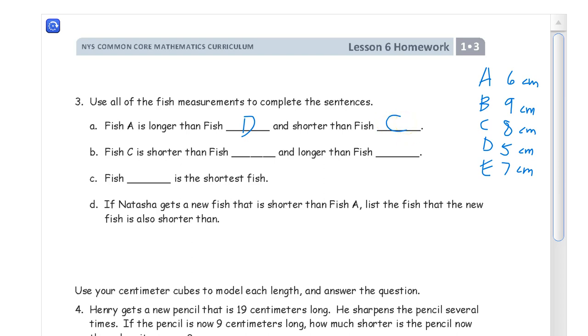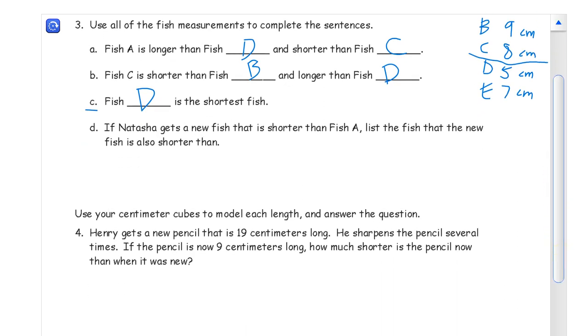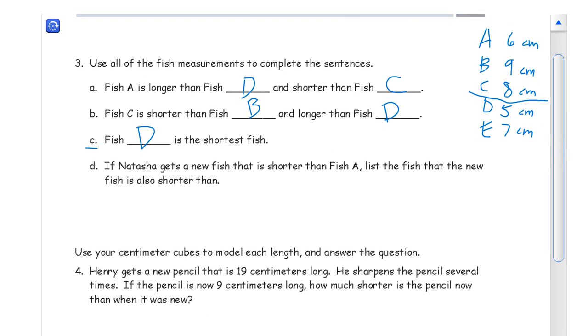Fish C is shorter than fish B. Well, fish B is 9, so that's shorter than 9. And it's longer than fish D. Fish D is 5, so it's longer than that. 8 is more than 5. And then finally, fish D is the shortest fish. It's only 5.